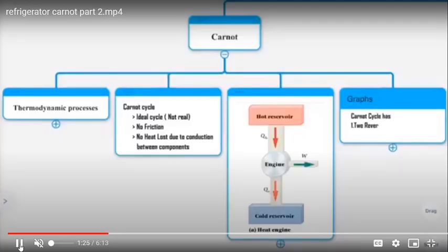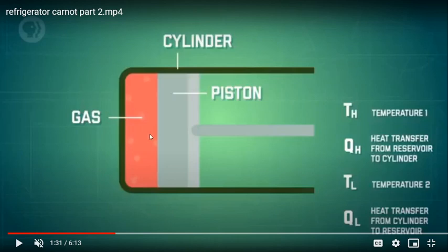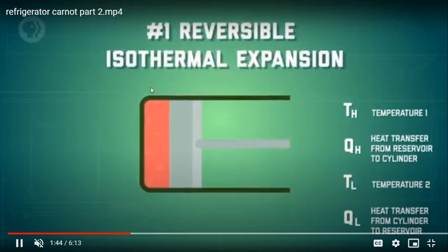Consider a cylinder. The sides are insulated, and the top surface is not insulated. In the first stage, we transfer energy to the cylinder using an external device. The gas expands slowly — this is the first process, isothermal expansion at source temperature.